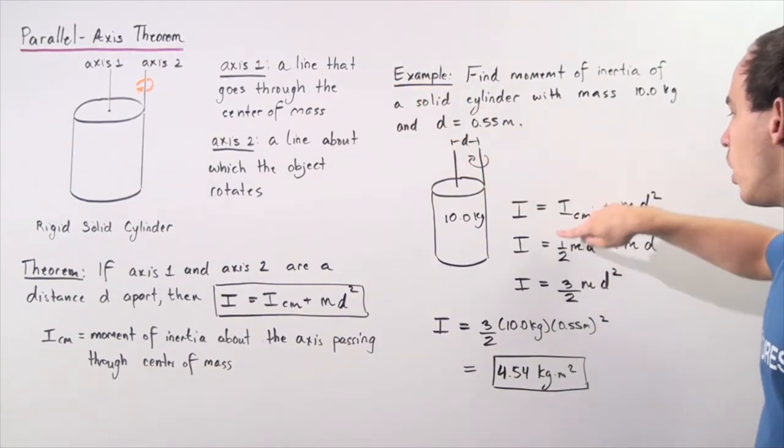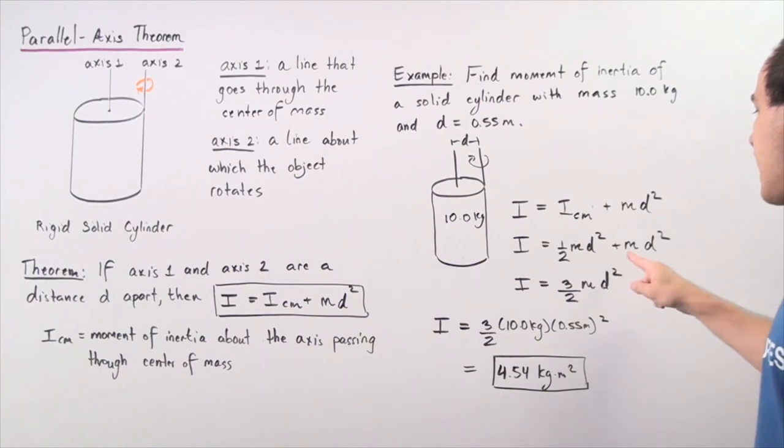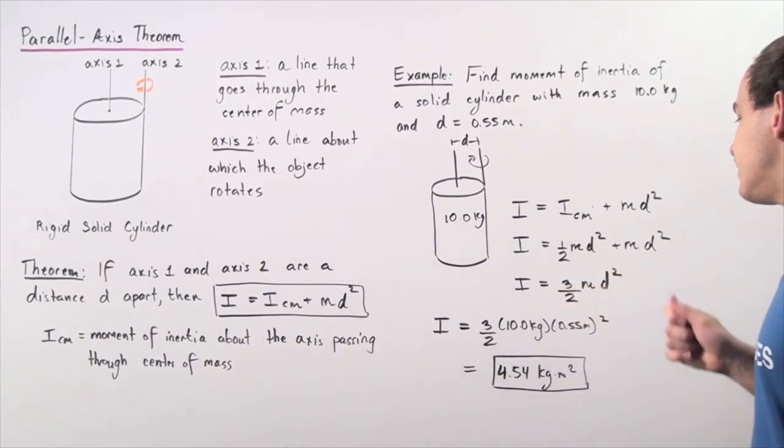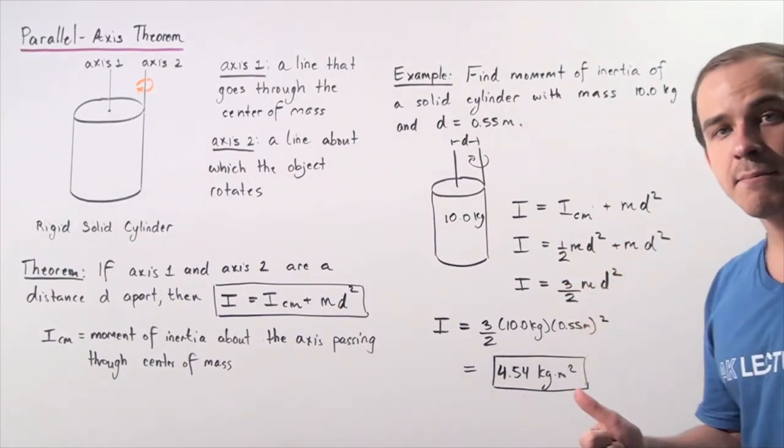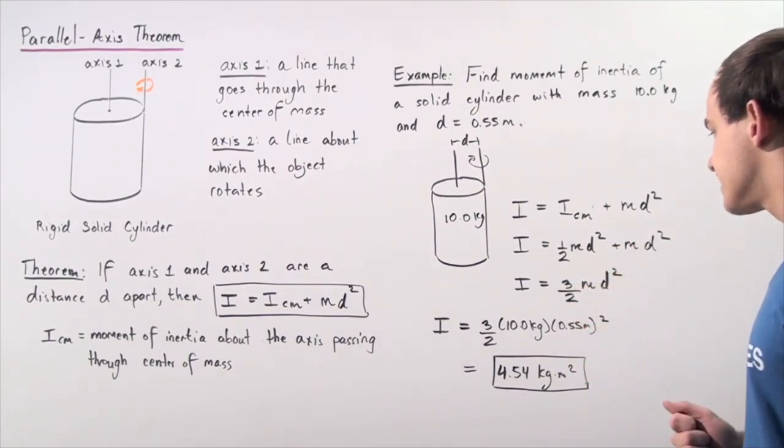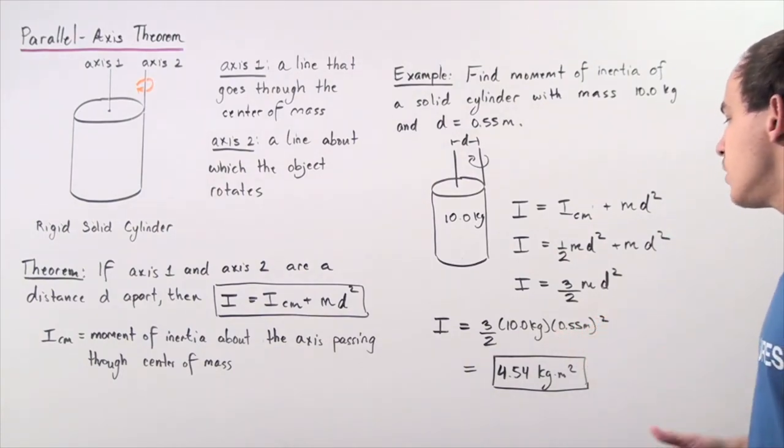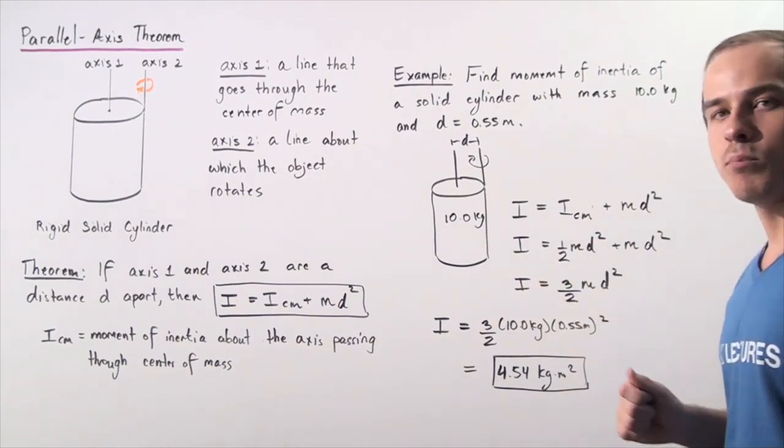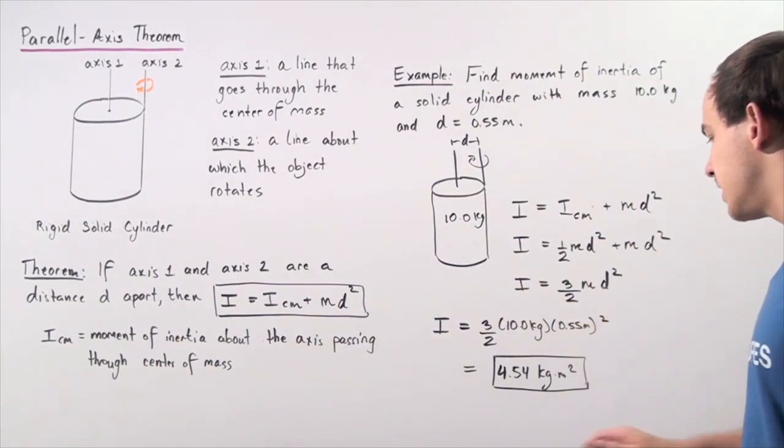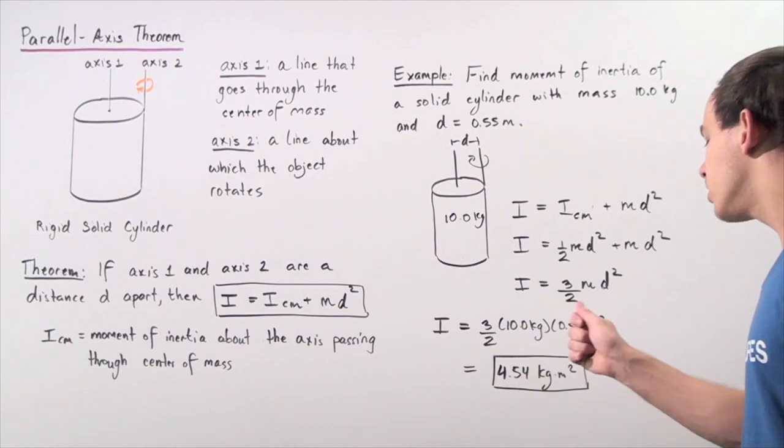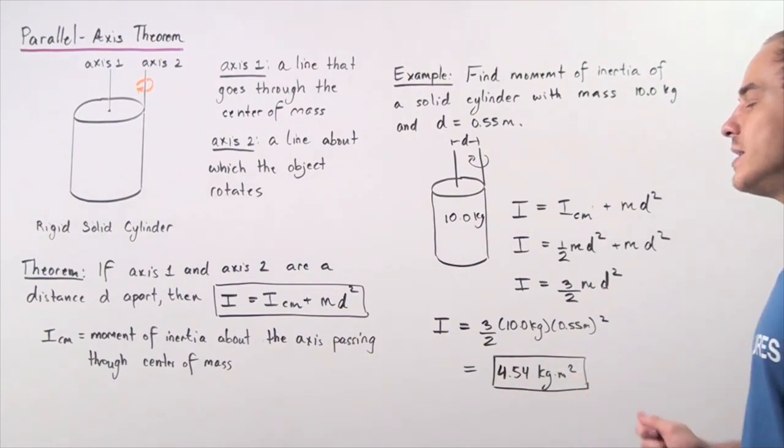Notice we have one half m d squared plus m d squared, and we get three halves m d squared, or 1.5 m d squared. We know what the m is, we know what the d is, we plug that in. We square the 0.55, multiply that by 10 and by 1.5, and we get approximately 4.54 kilograms times meters squared as our moment of inertia.